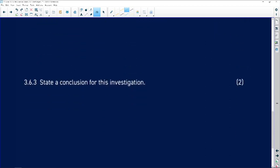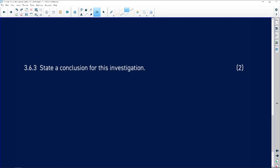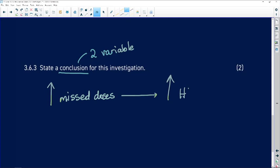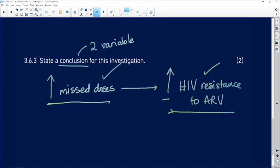State a conclusion for this investigation. We would say, and we've got to, in a conclusion, link our two variables. So, we would say, that with the increase in missed doses, we see that there is an increase in the chance of developing HIV resistance to antiretroviral drugs. So, we've got a positive correlation here. An increase in the missed doses leads to an increase in HIV resistance. And you'll get a mark for each one stated correctly.